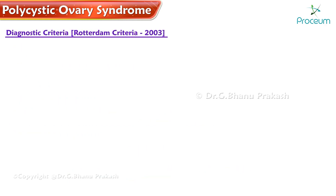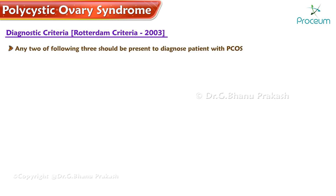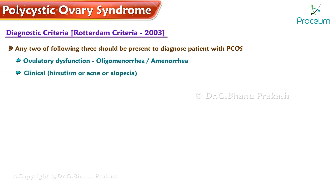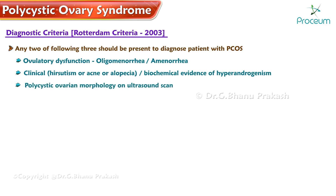Rotterdam Criteria 2003: any two of the following three should be present to diagnose polycystic ovary syndrome. First, ovulatory dysfunction such as oligomenorrhea or amenorrhea. Second, clinical evidence — hirsutism, acne, or alopecia — or biochemical evidence of hyperandrogenism. Third, polycystic ovarian morphology on ultrasound scan.